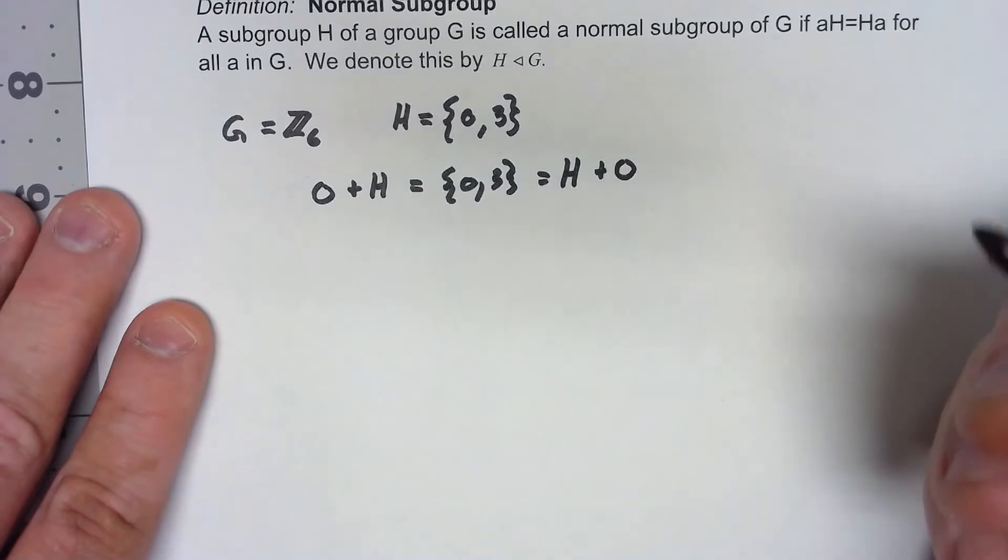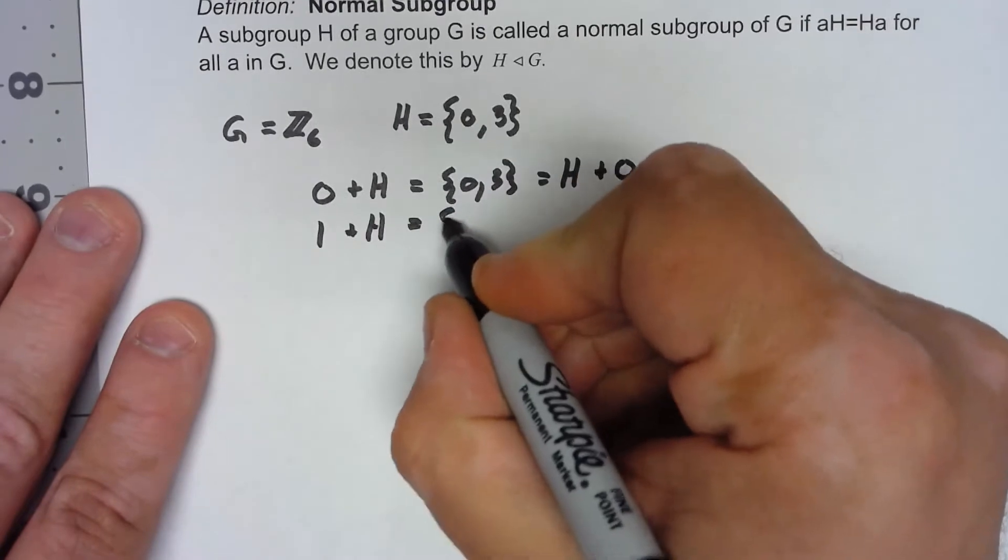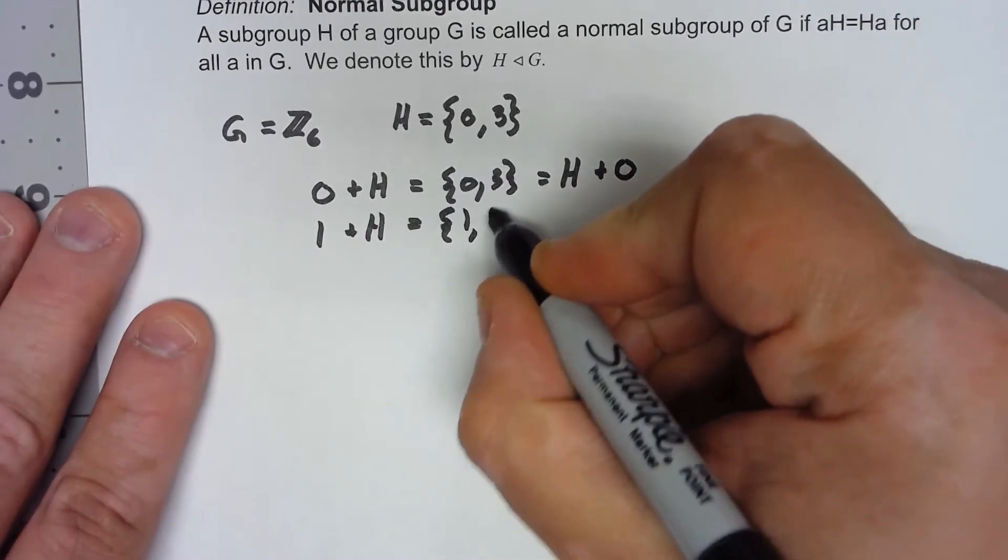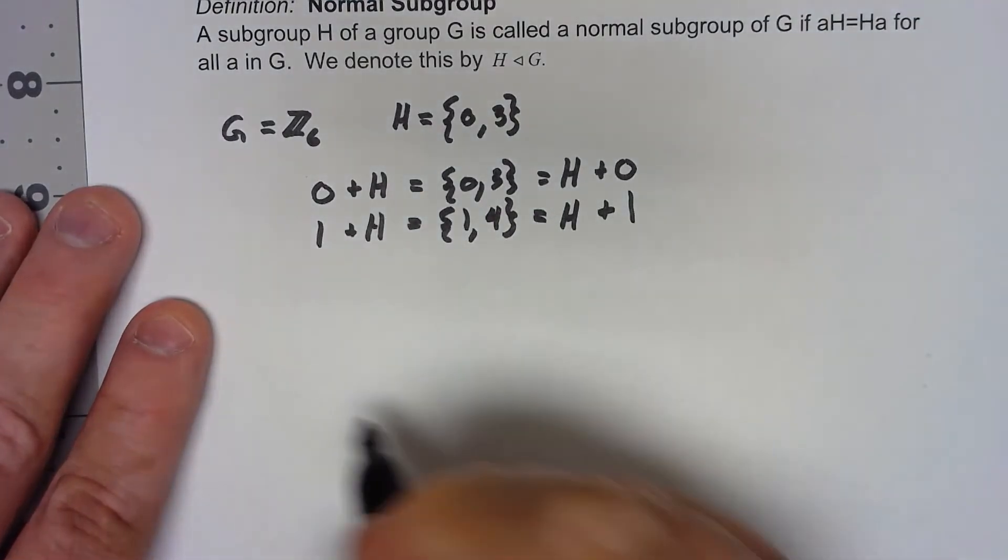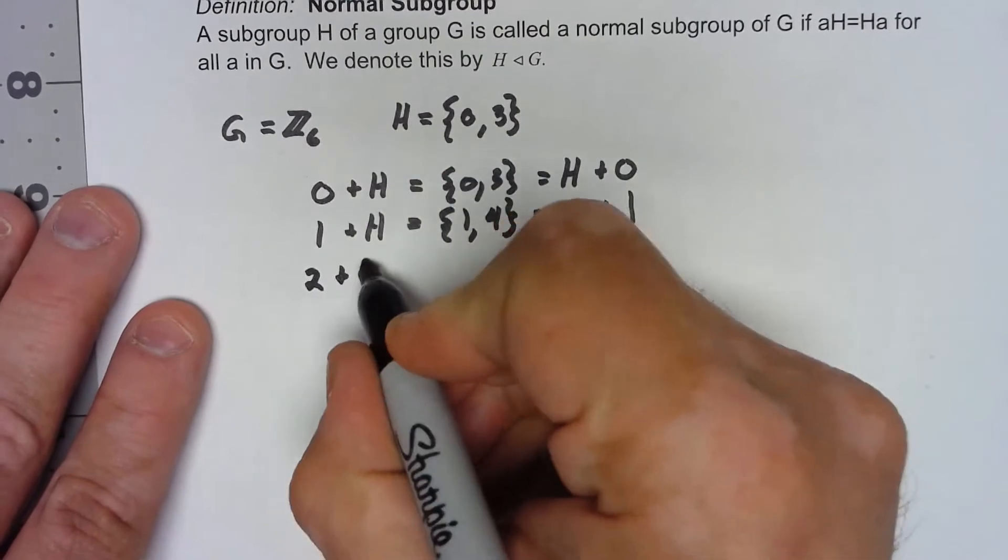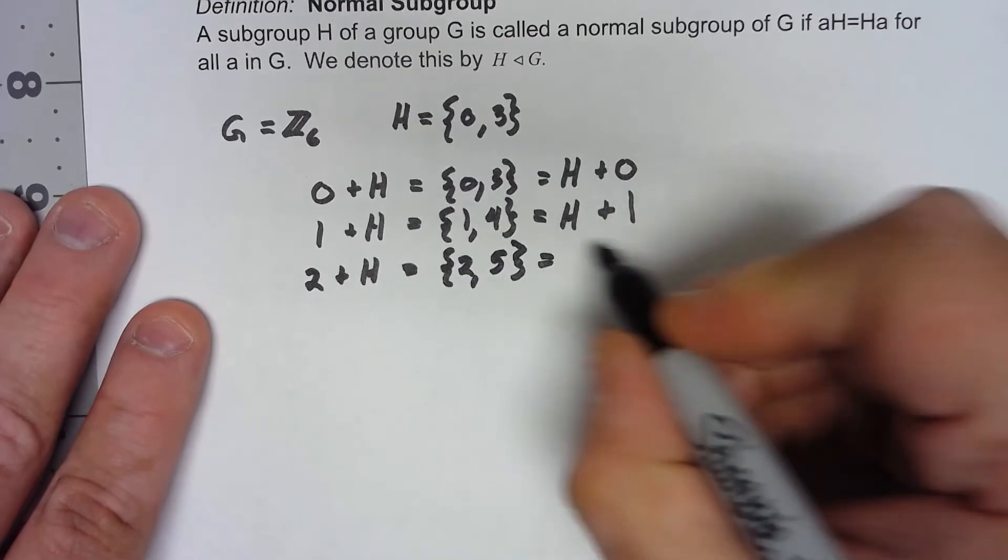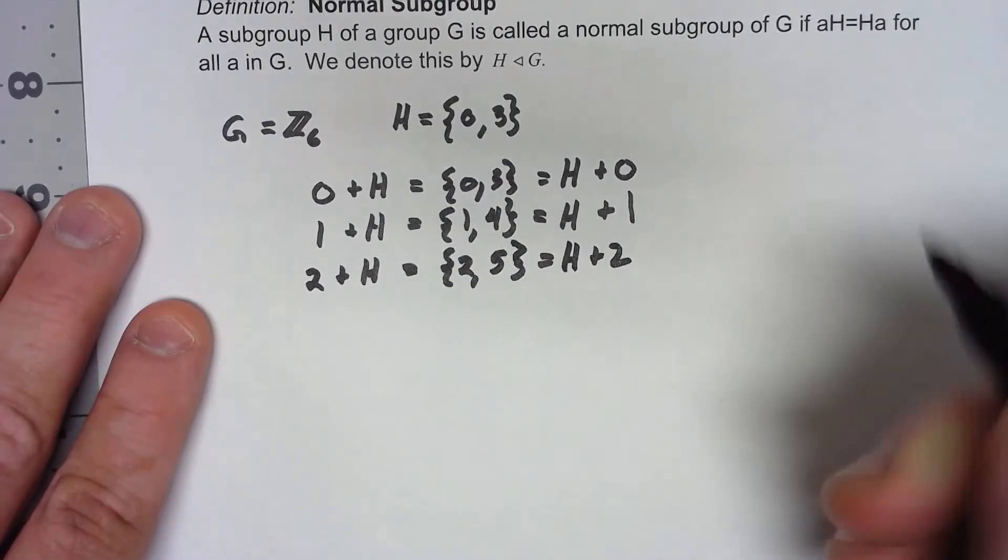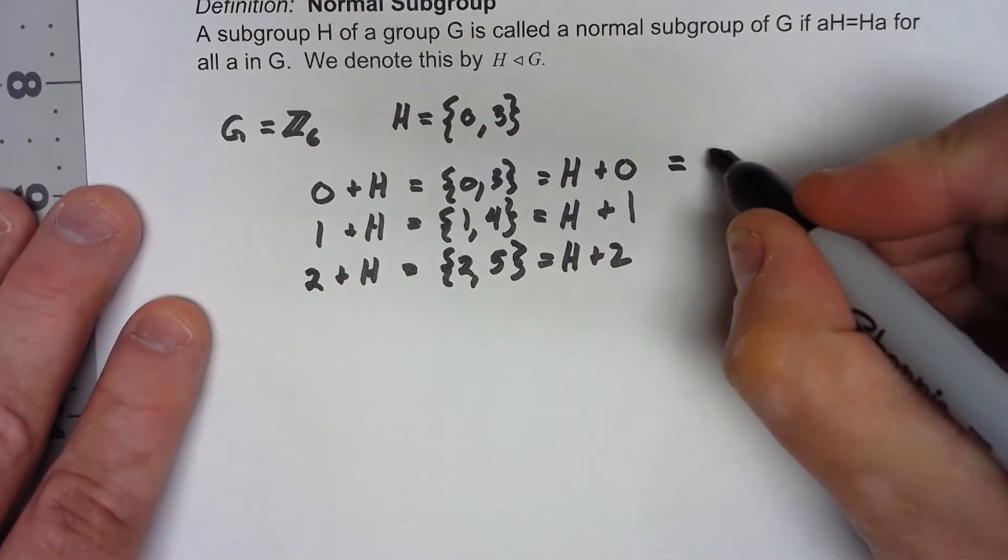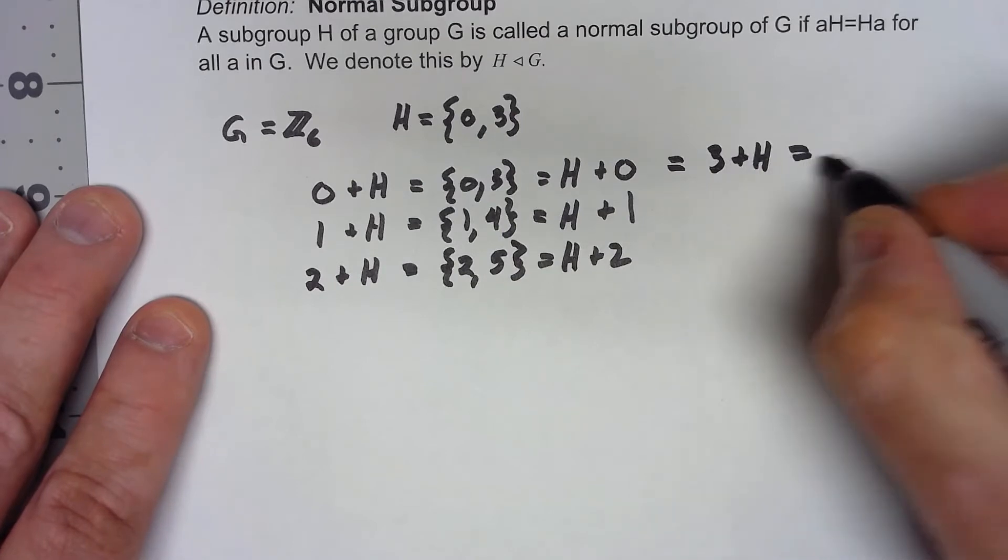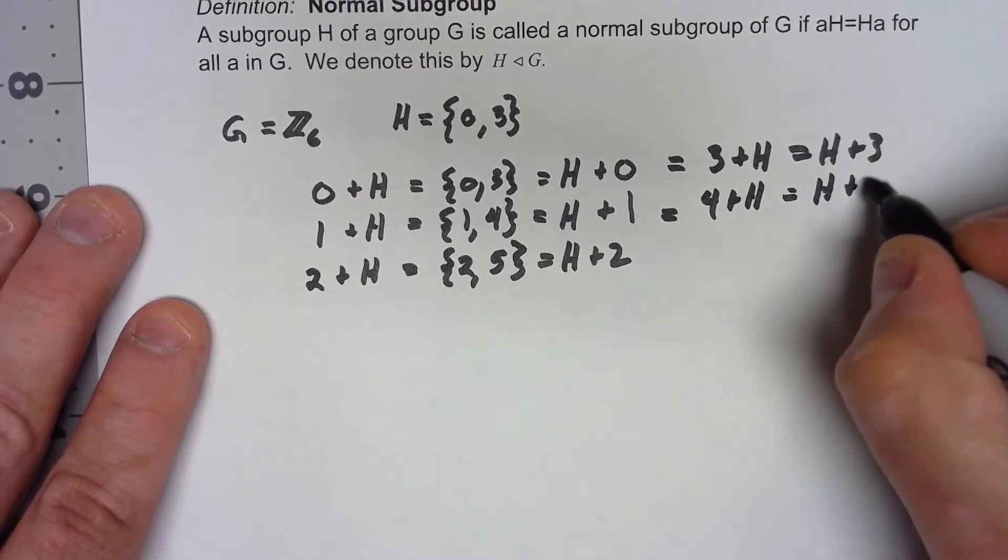If we look at 1 plus H, we get the set {1,4}, which is the same thing as H plus 1. Similarly, 2 plus H is {2,5} which equals H plus 2. This is the same as both 3 plus H and H plus 3. This is the same as 4 plus H and H plus 4. This is the same as 5 plus H and H plus 5.